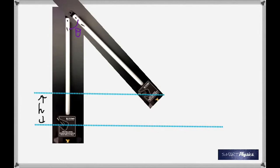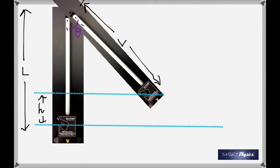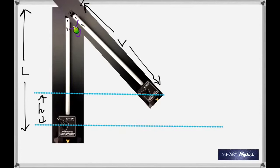The length of the pendulum is l — that's the same here and here, to the center of mass. So you can see a right angle triangle there. This is the angle that you measured from the experiment, and from that average angle we're going to calculate the height.